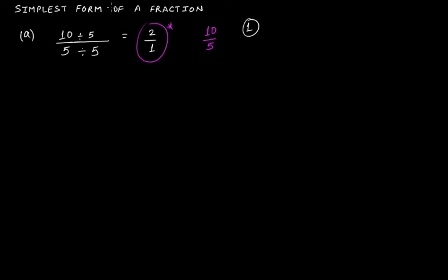This fraction cannot be further reduced to a simpler fraction since it has only one common factor, which is 1 itself. Now, notice that the divisor 5 that we used to divide 10 and 5 is actually the HCF — that is, the highest common factor of 10 and 5.